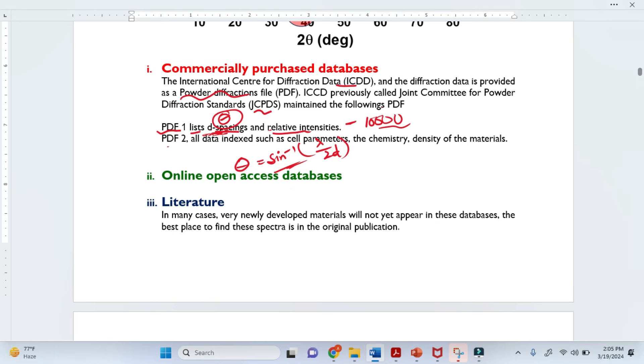Similarly, PDF2 indexes cell parameters, chemistry, and density of the materials. This database is not freely available, but we can purchase it and match our experimental XRD.